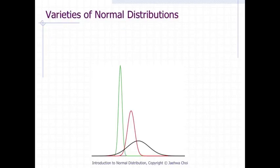The green, leftmost distribution has a mean of negative 3 and a standard deviation of 0.5. The distribution in red, the middle distribution, has a mean of 0 and a standard deviation of 1. And the distribution in black, rightmost, has a mean of 2 and a standard deviation of 3.